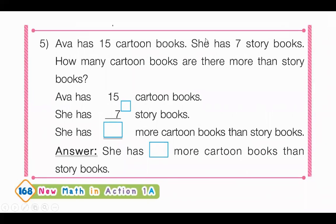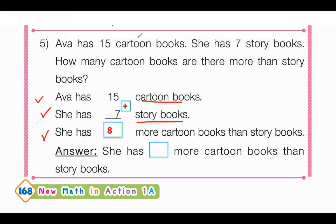Number 5: Eva has 15 cartoon books. She has 7 story books. How many more cartoon books are there than story books? Eva has 15 cartoon books and 7 story books. She has 8 more cartoon books than story books.